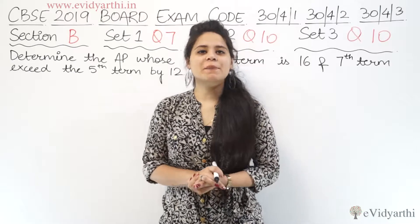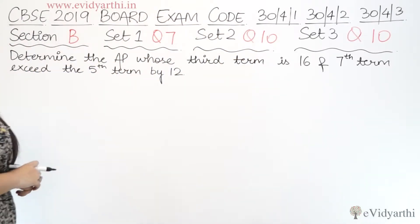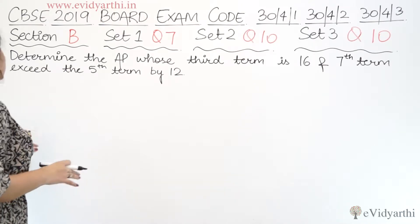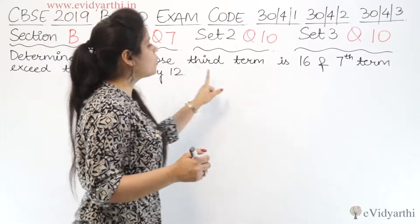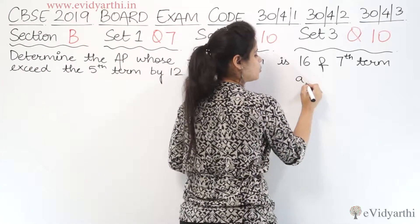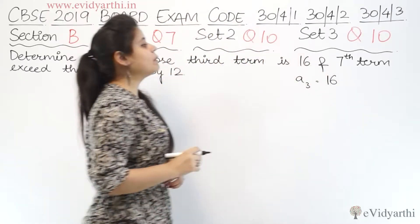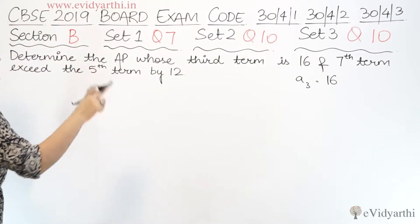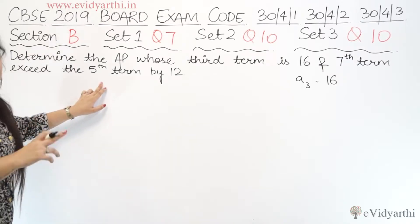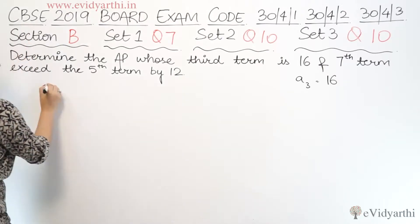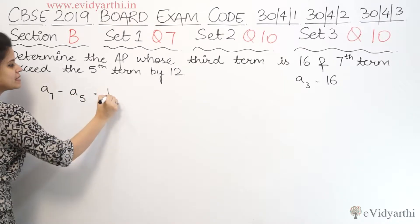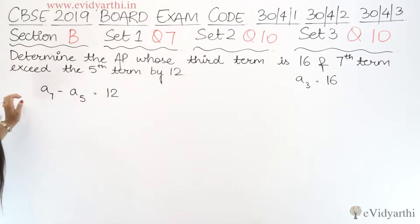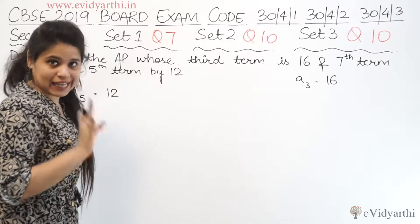This is question number 10 in the other sets. The question says determine the AP whose third term is 16 and 7th term exceeds the 5th term by 12. So here we have two things. One is the third term is 16 given. And we have been told that the seventh term exceeds the 5th term by 12. These two things are given and we have to find the AP.